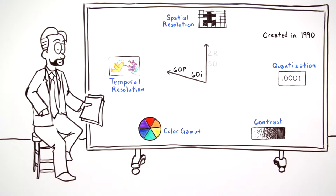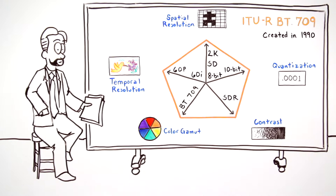In 1990, all of these parameters were incorporated into the international standard for HDTV, BT-709.